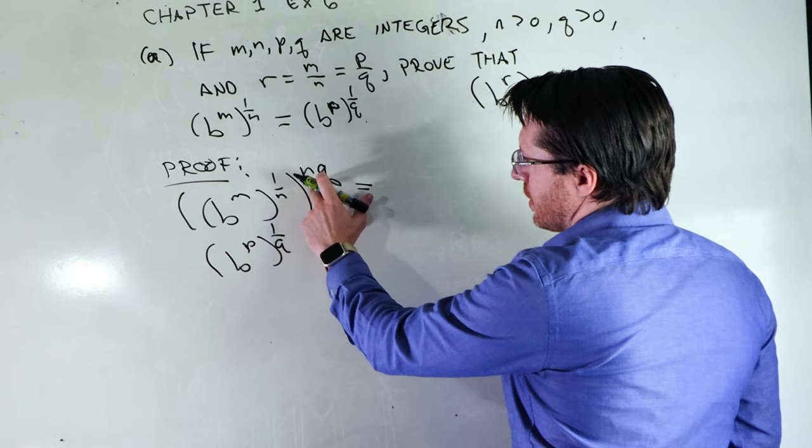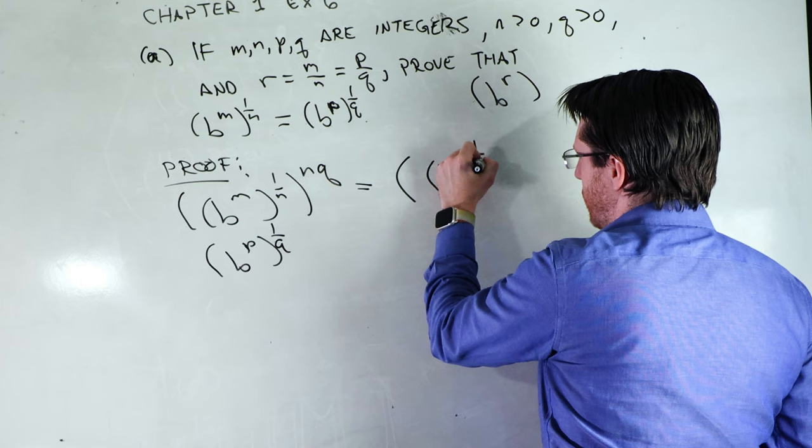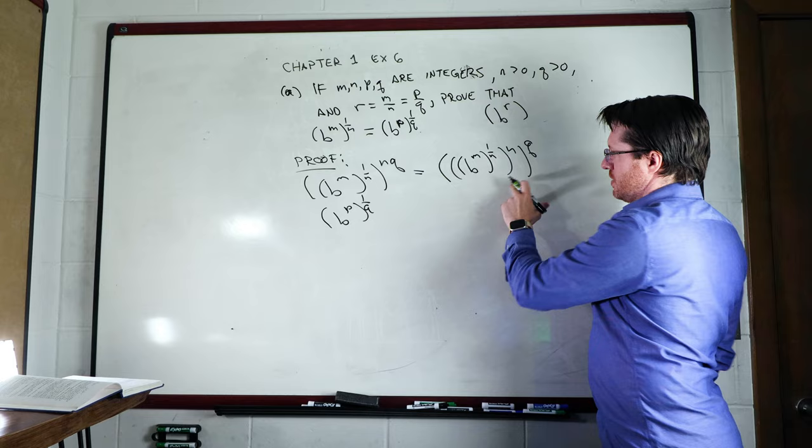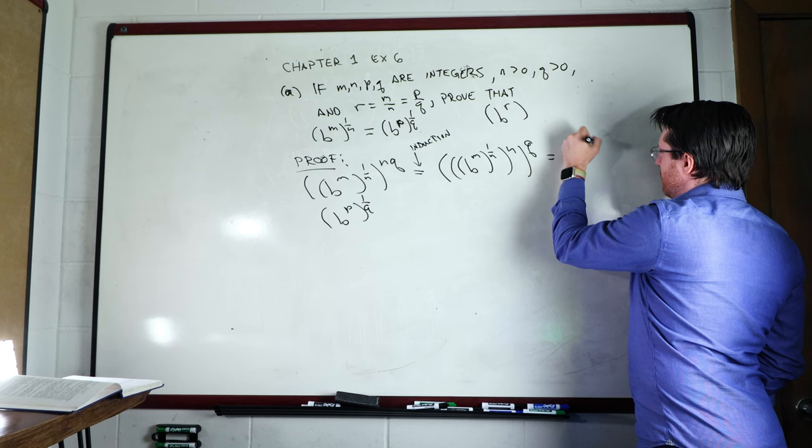One thing I'm gonna do is I'm gonna go ahead and split off this N and Q, and this is something you show works by induction, by the way. It isn't something that's self-evident. And so we get B to the M raised to the one over N, and this raised to the Nth power raised to the Qth power. Now the N cancels to one over N, and so then that makes this B to the M raised to the Qth power.